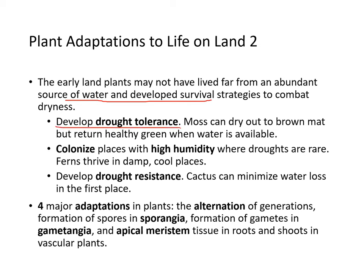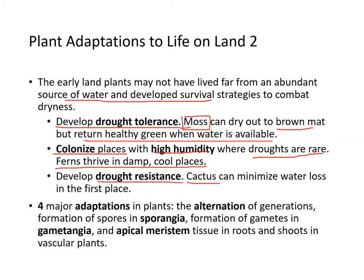Early land plants may not have lived far from water and developed survival strategies to combat dryness. They developed drought tolerance — moss can dry out to a brown mat but return to healthy green when water is available, and they typically colonize places with high humidity like under tree canopies. Ferns thrive in damp, cool places. They also developed drought resistance — cactus, for instance, can minimize water loss in the first place.